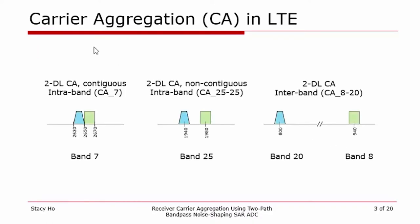There are several scenarios for carrier aggregation in LTE. In the scenario on the left, there are two contiguous carriers in the same band, or intra-band. In the middle scenario, there are two non-contiguous carriers intra-band. And in the scenario on the right, there are two non-contiguous carriers in different bands — in this case, one in band 8 and one in band 20.